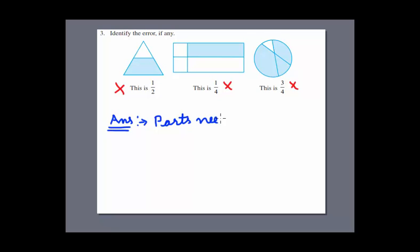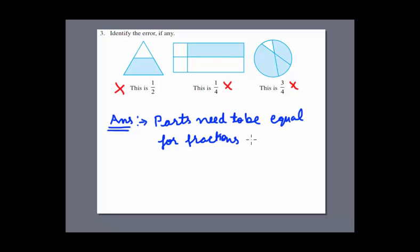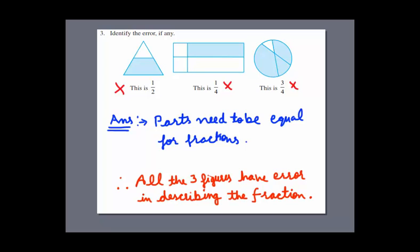Parts of a whole need to be equal. That's what we have learned from the lesson of fractions — parts need to be equal for fractions. Therefore all three figures have an error in describing the fraction.